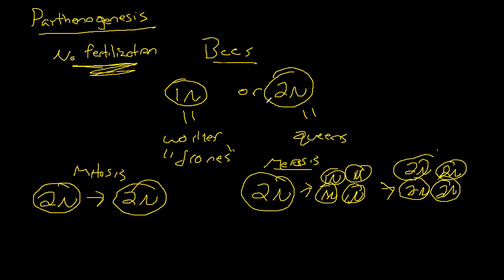Parthenogenesis overall is the formation of an egg without fertilization. It usually occurs within lower species such as reptiles, some fish, ants, and of course the bees that we were looking at.